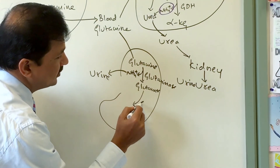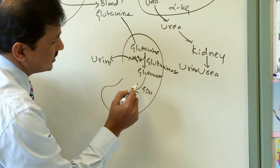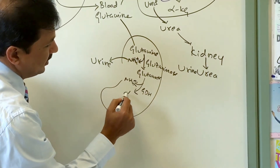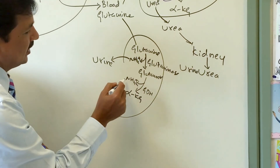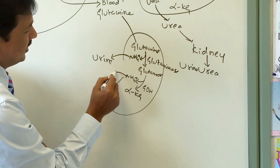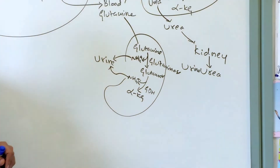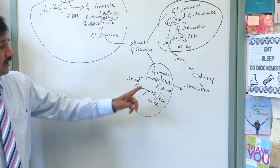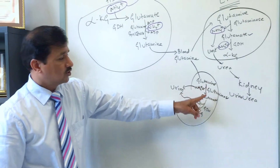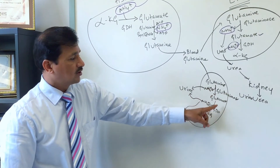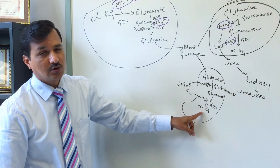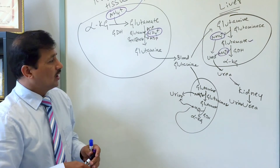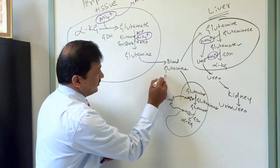Further, in the kidney, glutamate dehydrogenase breaks glutamate down into alpha-ketoglutarate, releasing one more ammonium ion that is also released into the urine. So the source of ammonium ion in urine is: glutamine → glutamate → alpha-ketoglutarate.